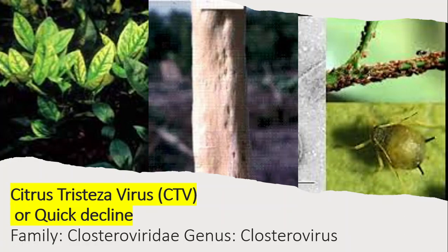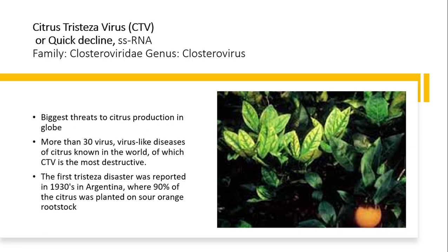Assalamu alaikum students. This is the last viral disease of this category in applied plant pathology. Citrus Tristeza Virus (CTV), also called quick decline, is caused by a pathogen belonging to family Closteroviridae, genus Closterovirus. This is a single-stranded RNA virus and is the biggest threat to citrus production around the globe. CTV is the most dangerous and destructive among citrus viruses.